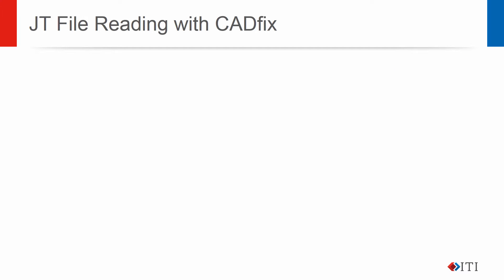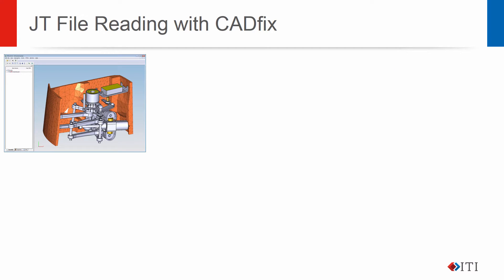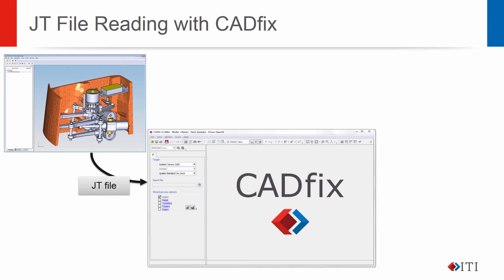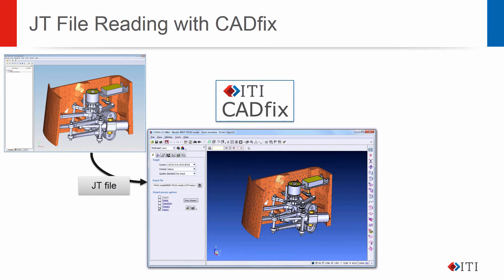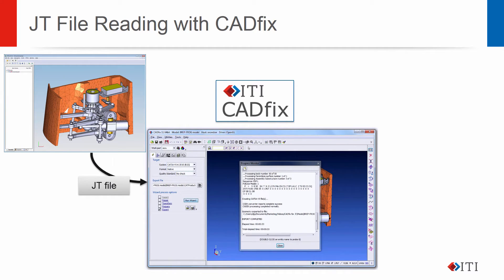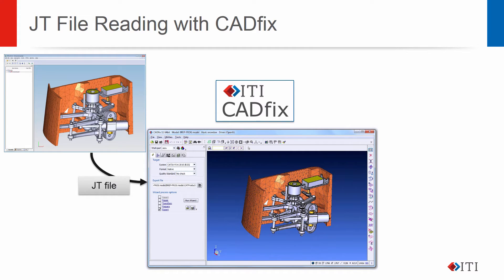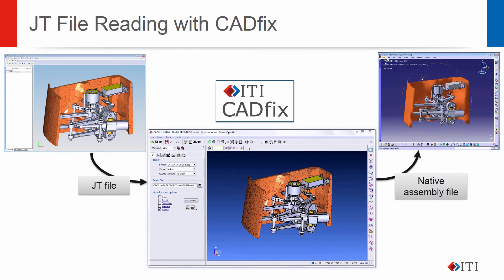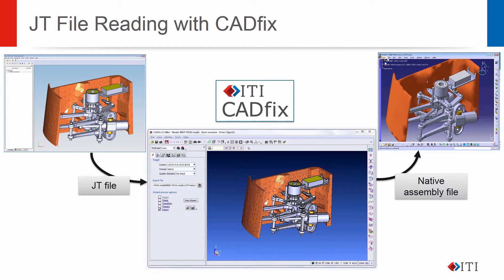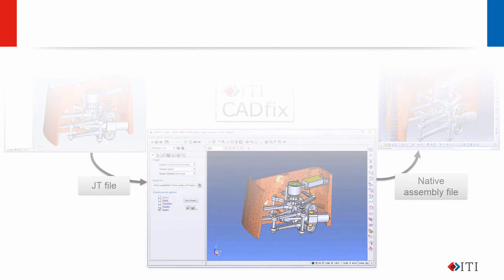When you receive JT or PLM XML files, CADFIX provides the necessary processing and interfaces to convert the models into the most appropriate format for use in your design system. CADFIX seamlessly handles the cases where the JT file contains a mixture of boundary representation and faceted geometry, translating and combining both representations into a mixed assembly structure for use in your CAD system.